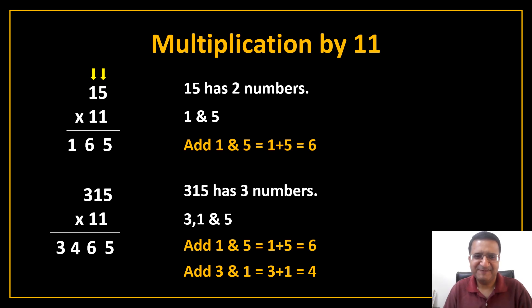See the miracle. So what you did? You had 5 and 1, last 2 digits. You just added them. You got 6. You inserted 6 and then you had 1 and 3, first 2 digits. You added them. You got answer 4. You inserted 4 and you got your answer 3, 4, 6, 5. See the beauty of Vedic Maths.